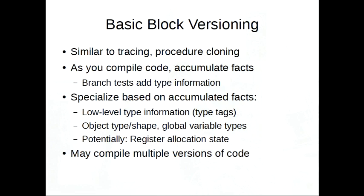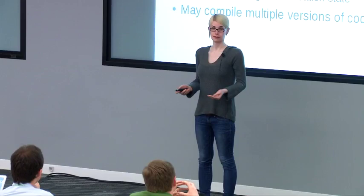Basic block versioning is a compilation technique that's a little bit similar to trace compilation and procedure cloning. The idea is that as we compile, we accumulate facts — more specifically, usually type information. When we have dynamic type tests, we can use those to gain type information. So if we test if x is an integer, we gain the information that x is integer if the test evaluates to true. Then we use the information we accumulate to generate more optimized machine code, and we might compile multiple versions of the same code optimized based on different types.